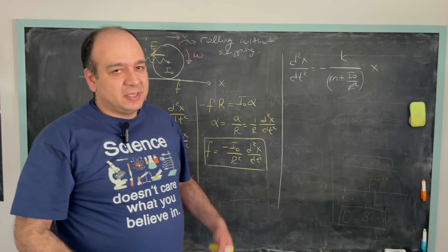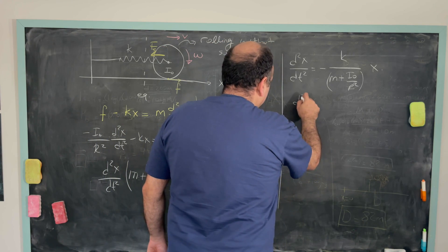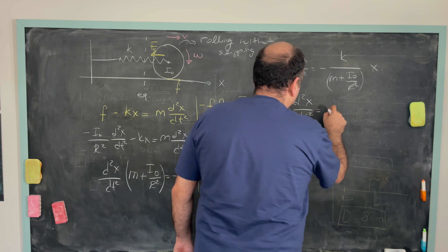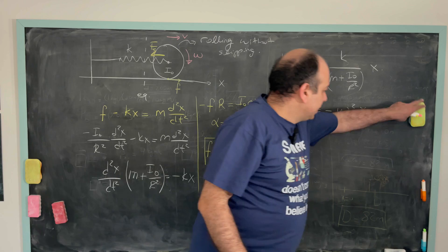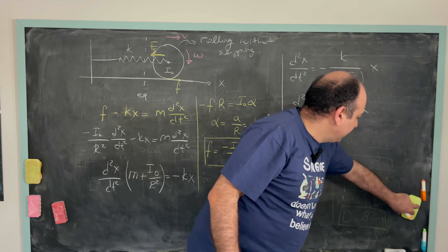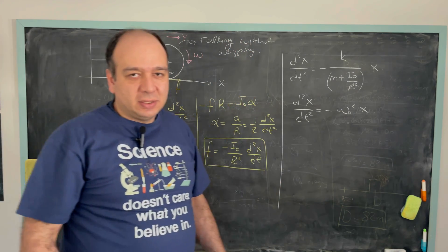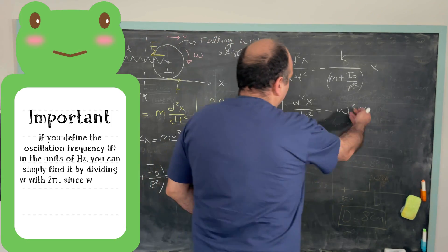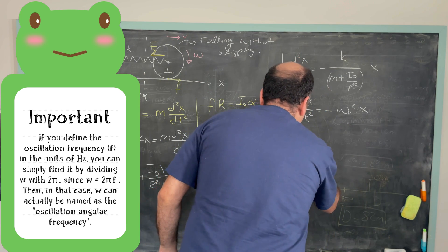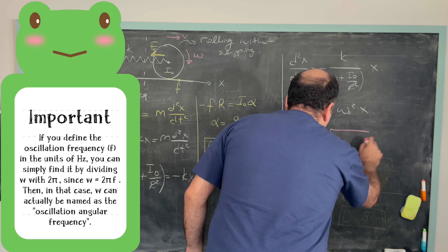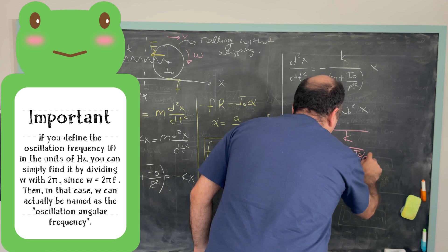So this is in the form of a simple harmonic oscillator equation. So as you may remember, for any simple harmonic oscillator, we will have the equation of motion in this form where omega 0 would be the oscillation frequency. So if I compare these two, for this system, I see that omega is simply equal to square root of k over m plus i0 over r square.